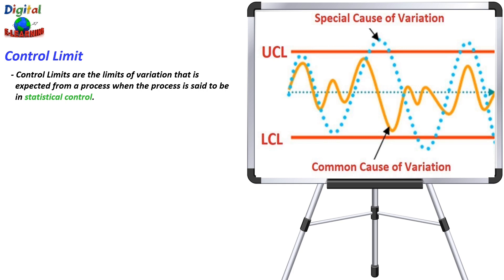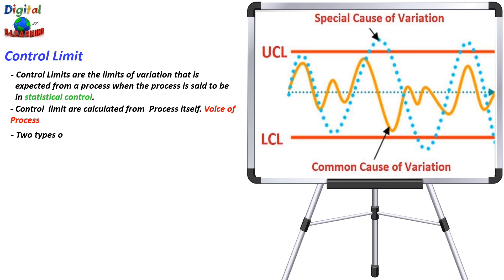Any variation that causes a data point to cross the upper control limit or lower control limit indicates a special cause of variation. When the process stays within these two limits, it shows common cause variation. Control limits are calculated from the process itself because they show how the process is performing — they are also referred to as the voice of the process. There are two types of control limits: upper control limit (UCL) and lower control limit (LCL), which are calculated using the mean and the standard deviation.